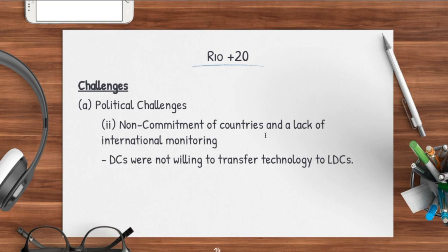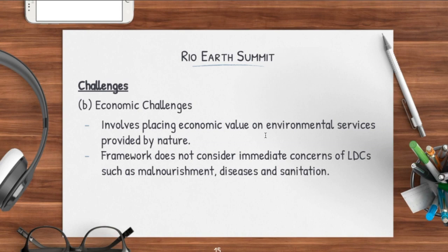When there is no technology transfer, less developed countries will continue to remain behind as they are not up to date with the latest technology. The economic challenge involved placing economic value on environmental services, and the framework did not consider the immediate concerns of LDCs such as malnourishment, disease, and poverty. The challenge is that enforcing sustainable development leads to the misconception that the environment is purely of economic value — which is the flawed view many LDCs hold, seeing sustainable development as a vehicle for economic growth. This was one of the major challenges from Rio+20.